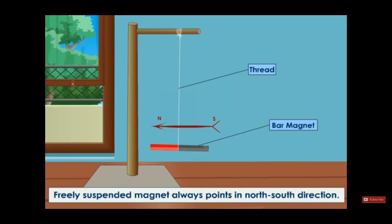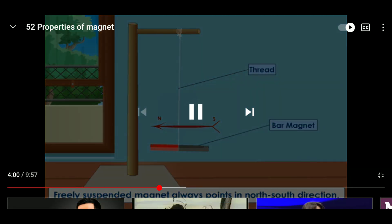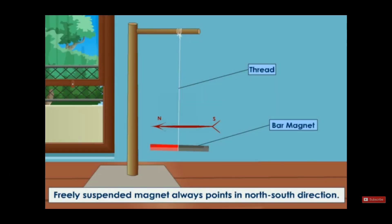Let's talk about another property of the magnet. If we freely suspend the magnet and let it move freely, it will always point to the north-south direction. As we said before, the magnet has two poles: the north pole and the south pole. So the north pole will point to the north direction and the south pole will point to the south direction.